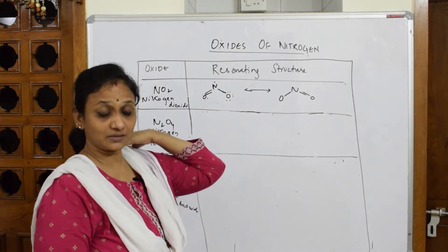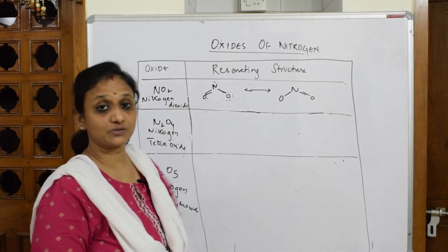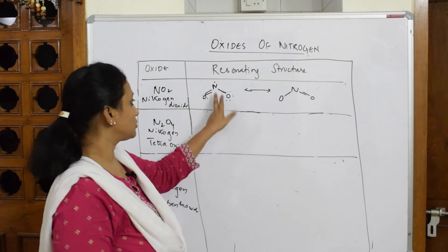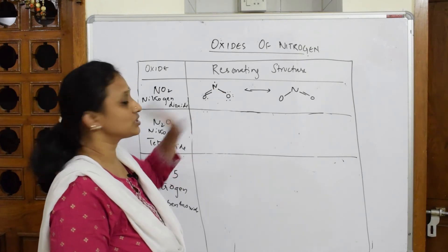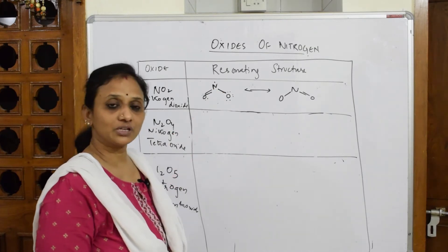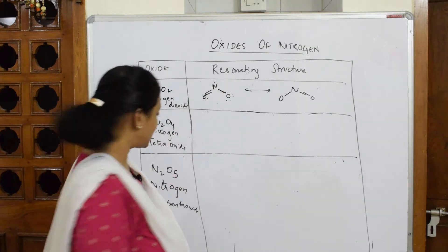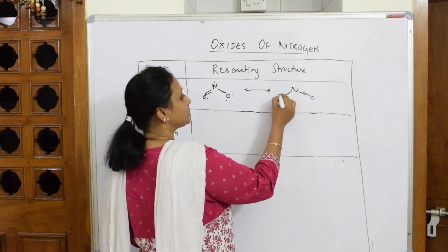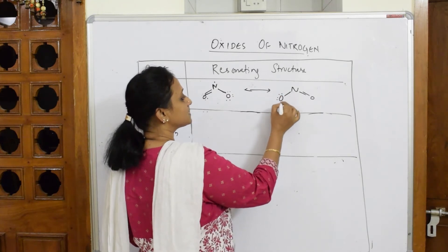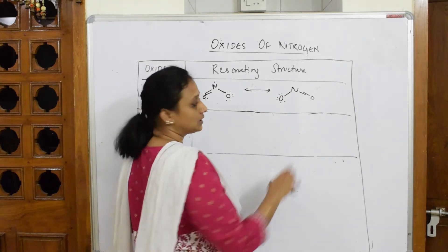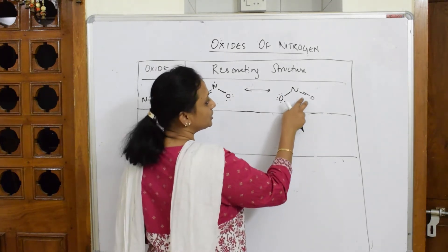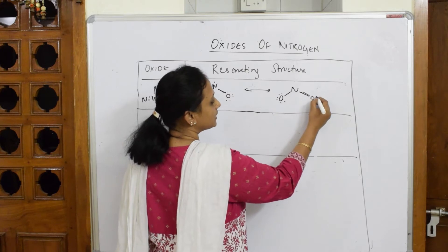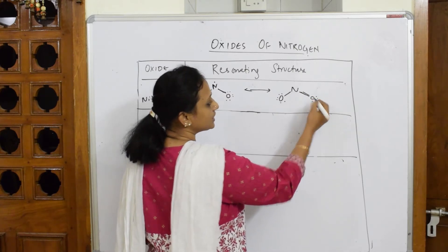You have studied nitrite and nitrate compounds of nitrogen in grade 11 — those are also odd-electron species. For the resonance structure of NO₂: fill in the electrons — 1 through 8 for oxygen, already four are there for the other oxygen: 5, 6, 7, 8 done. For this nitrogen, same story — odd electron.